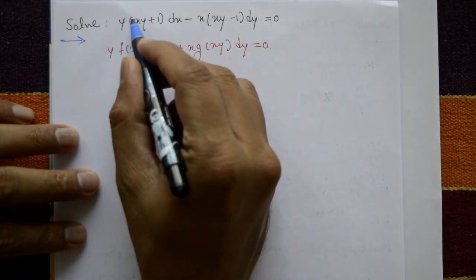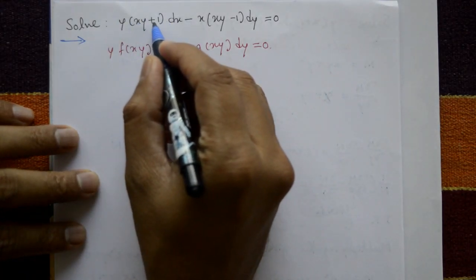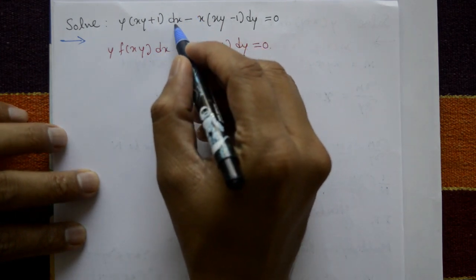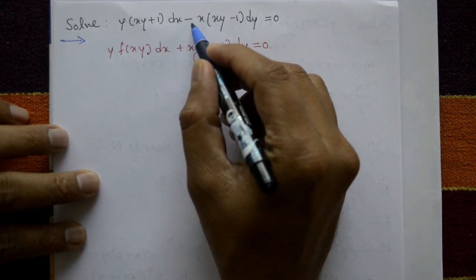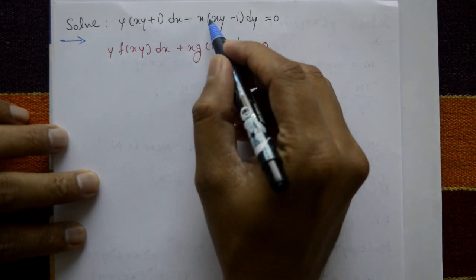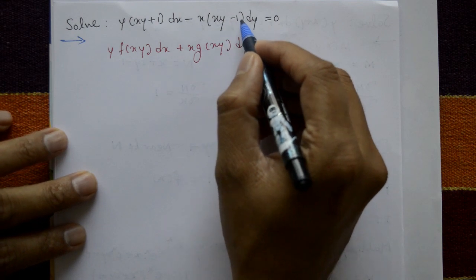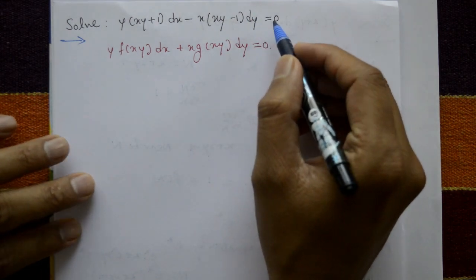y times (x + y·x·y + 1) dx minus x times (x·y minus 1) dy equals 0.